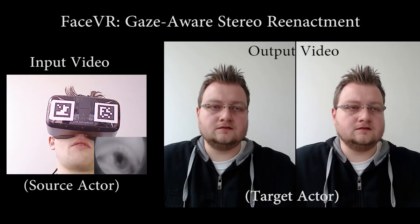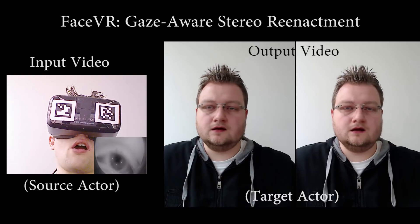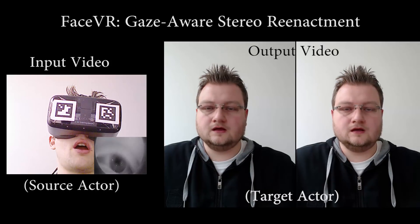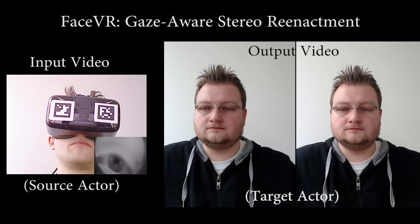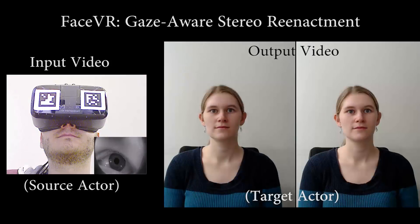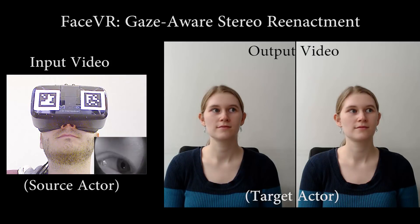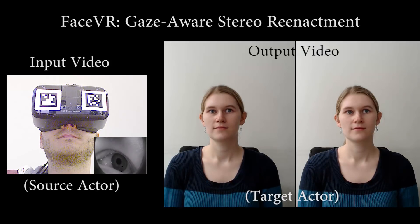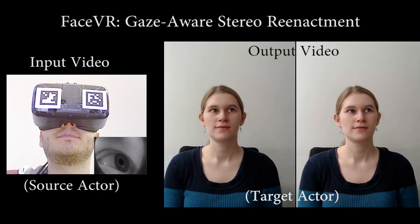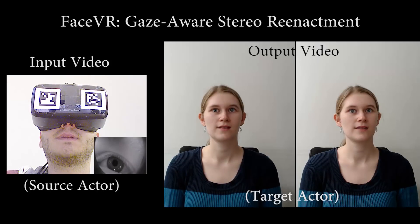Here we show a close-up of our reenactment results. On the left, we show input from both the external camera, used to track the lower part of the face, and from the internal IR camera. Our real-time approach drives the target actor on the right based on these inputs. Even eyeblinks can be transferred from source to target, leading to realistic stereo re-renderings.